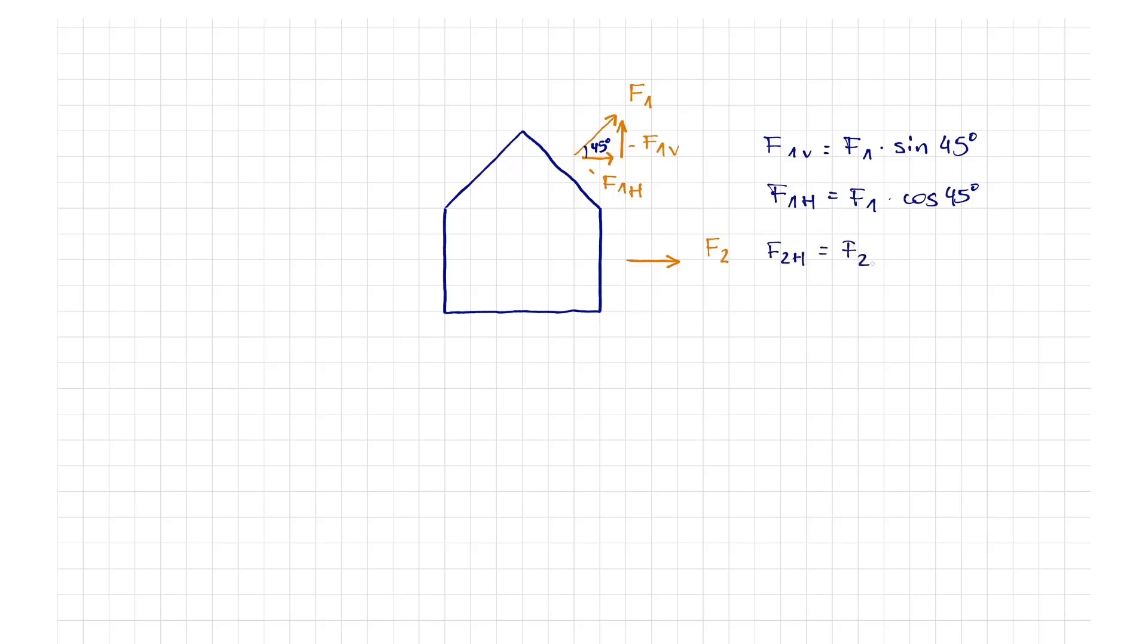The force F2 is entirely horizontal with a vertical component equal to zero. When we have all the forces in the system vertical and horizontal, we can proceed with the sum of all vertical and horizontal loads.